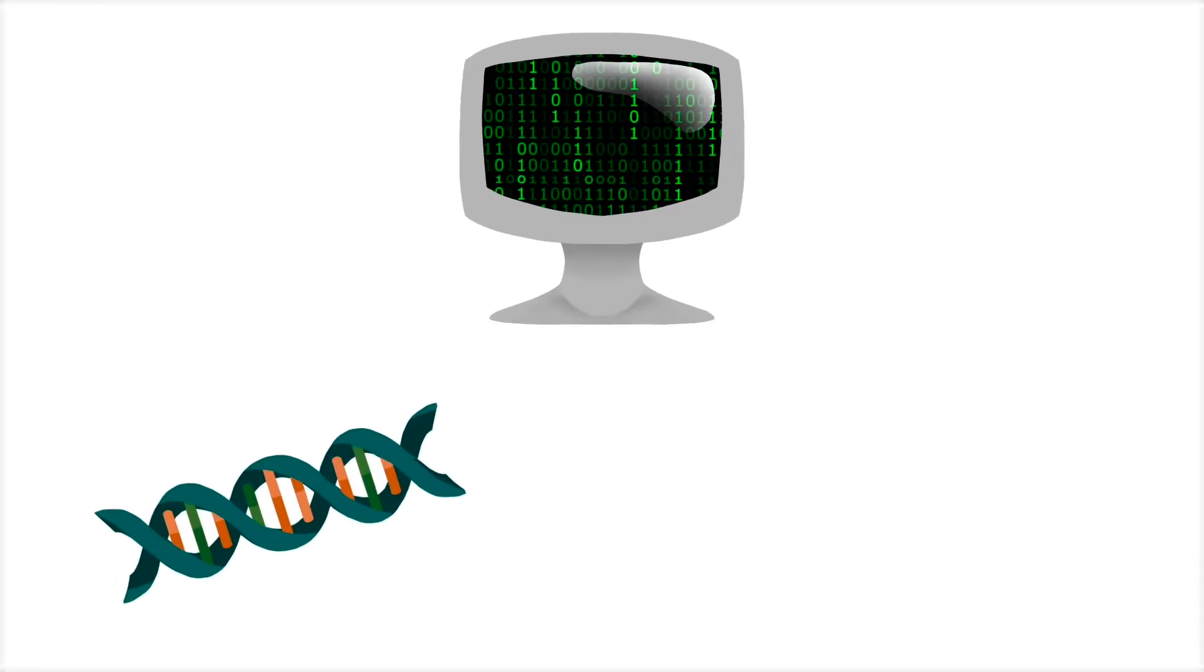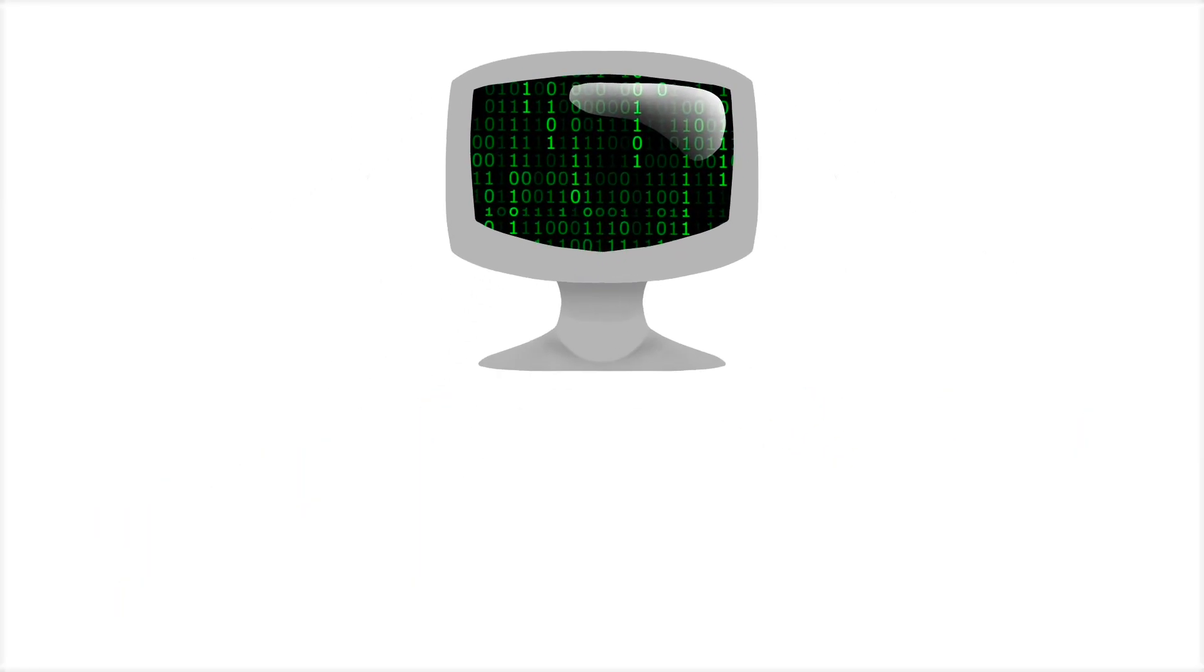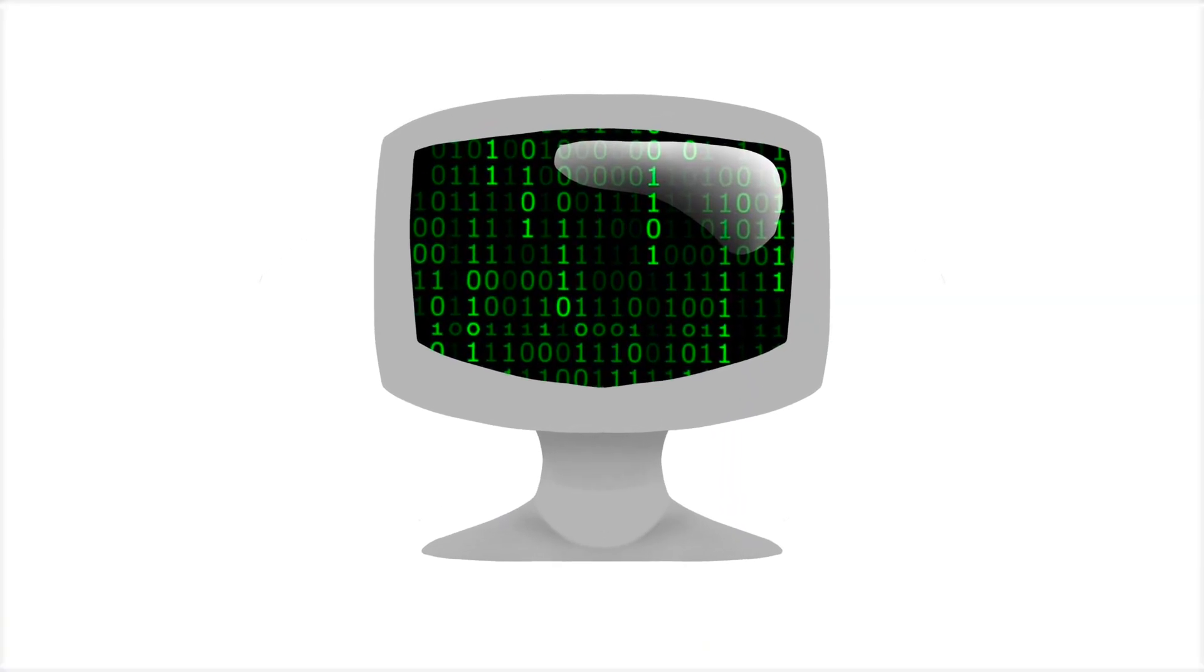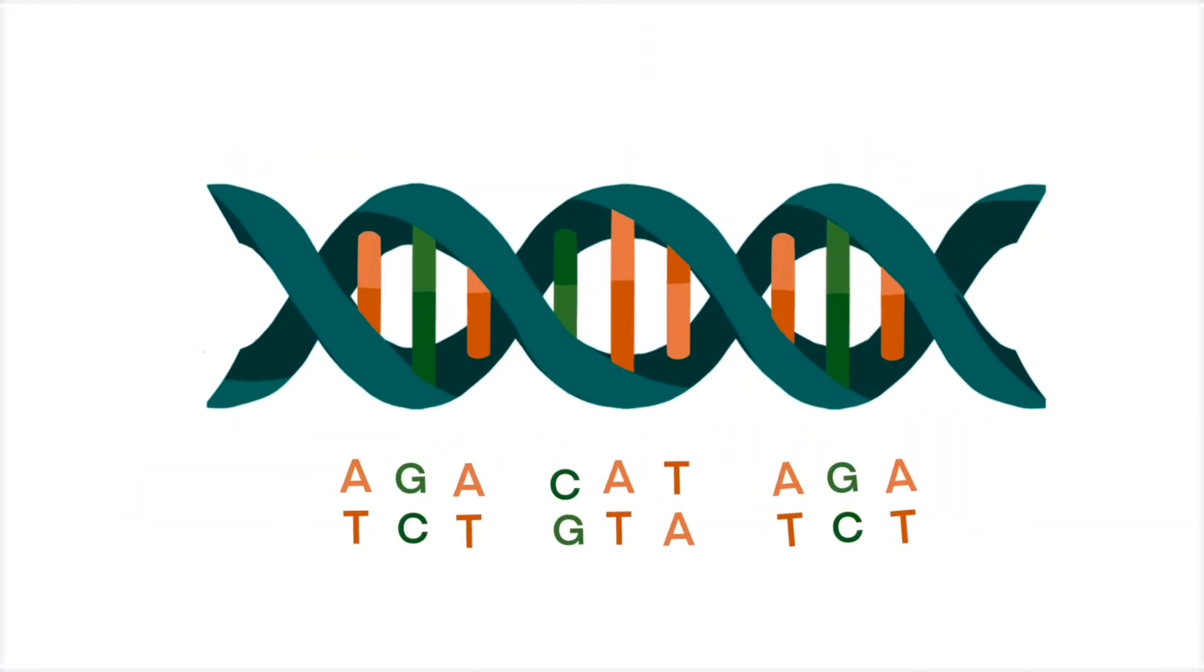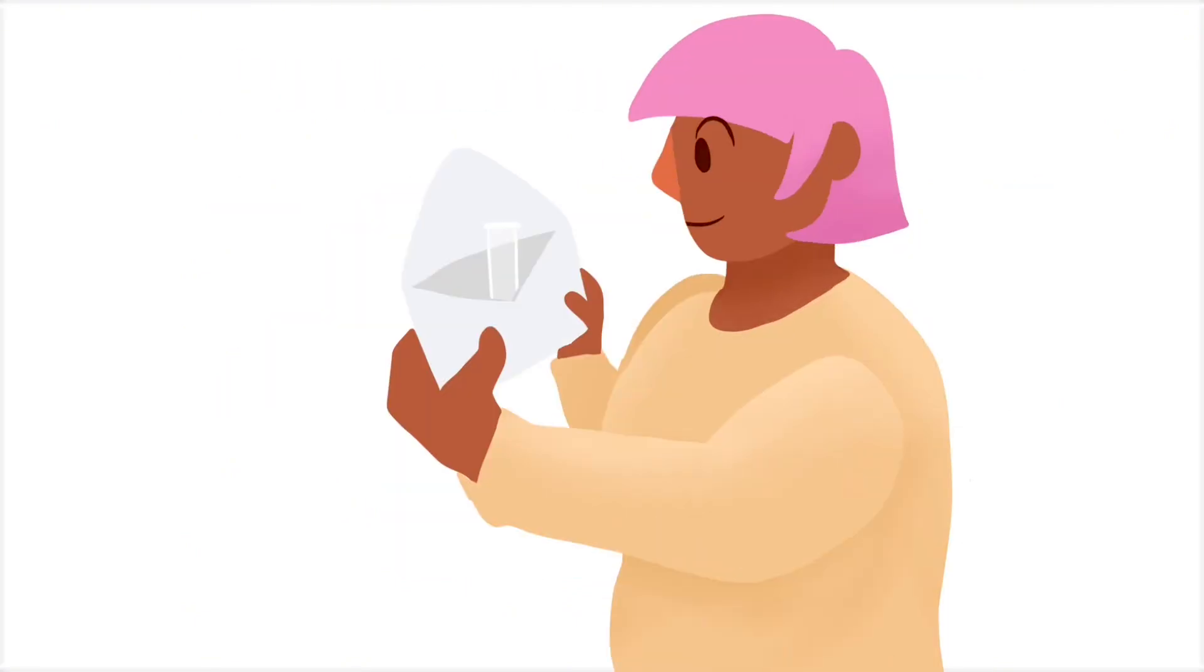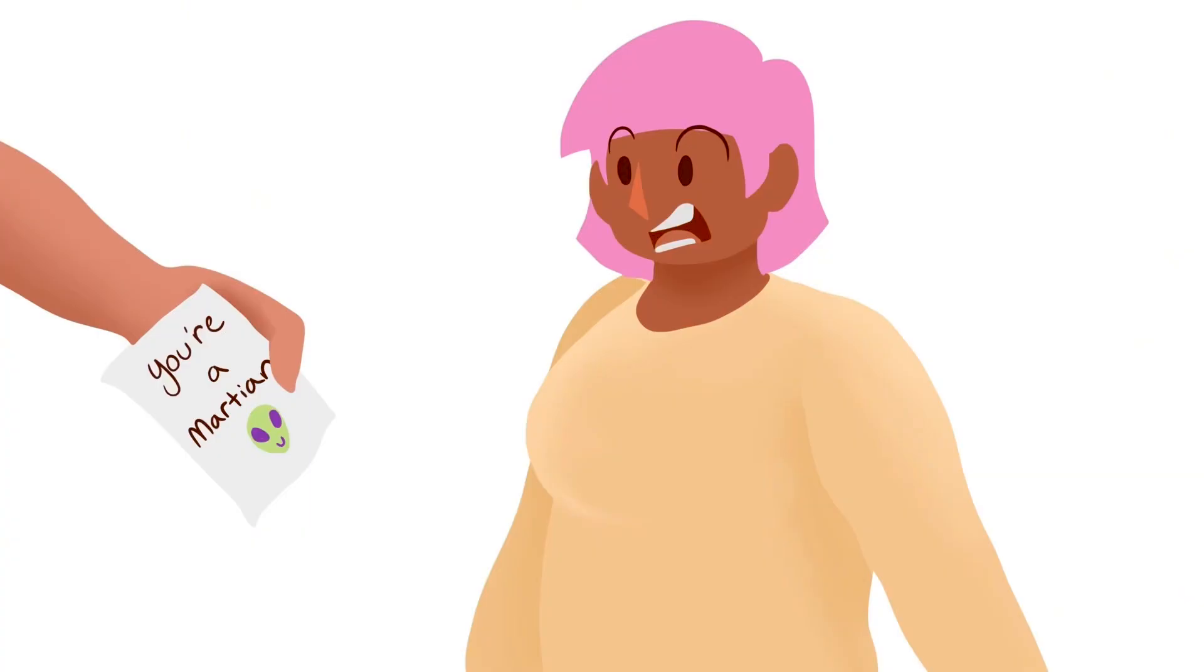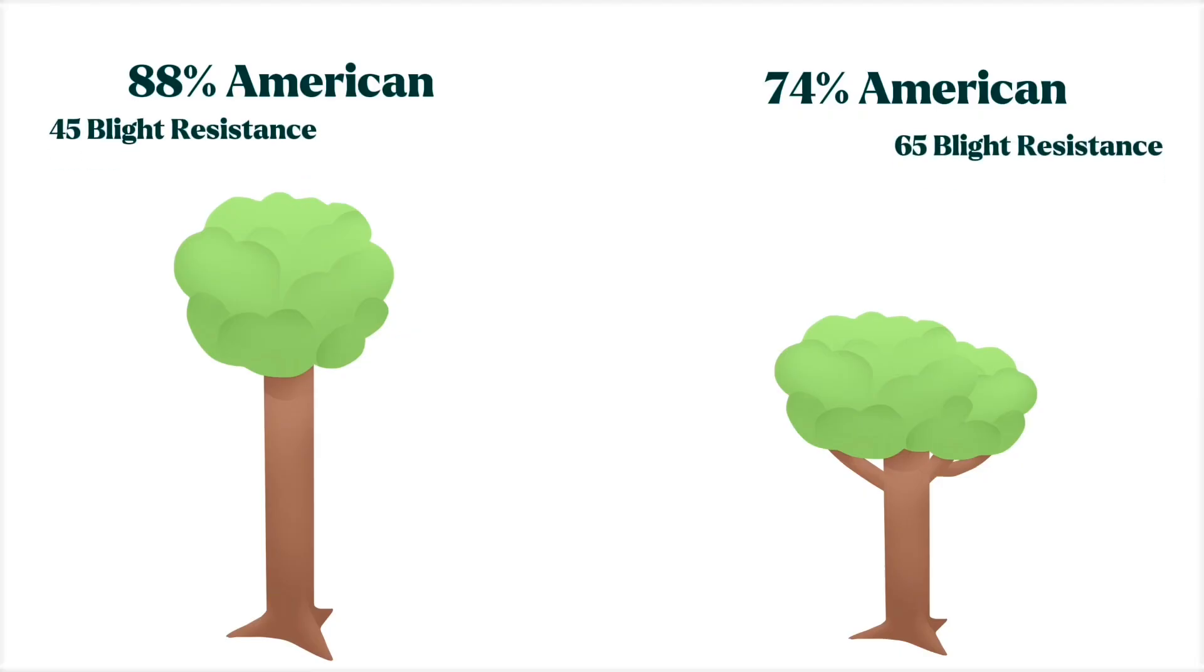The model then matches up genetic variations with physical signs of disease resistance. Now we can use this computer model to do a better job of figuring out which of these thousands of trees have the highest disease resistance based only on their genotype. The model can also use the genetic markers to figure out how much American chestnut ancestry each tree has, like when you submit a DNA sample to an ancestry service. That way, we can select the parent tree with high levels of American chestnut ancestry and high levels of disease resistance.